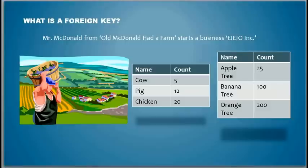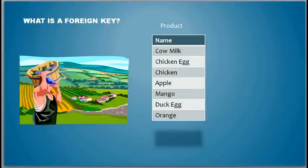So this is just a fictional company. He wants to produce goods and sell. To do that, he takes a list of what things he can produce — so he takes a list of products.